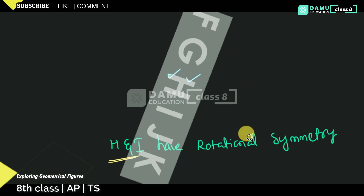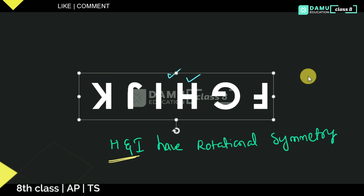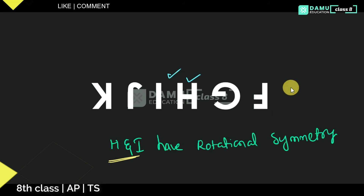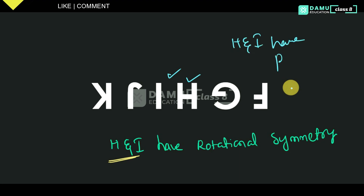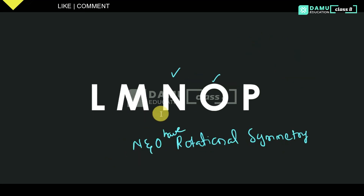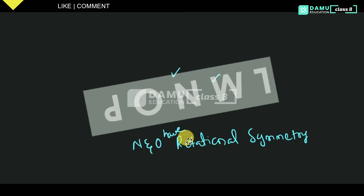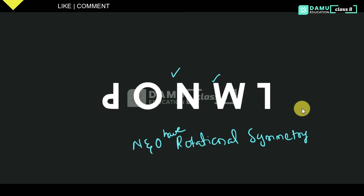If you rotate like this — yes, we are getting H and I as having point symmetry. H and I have point symmetry — that is, up and down we can see the same. Next, N and O also — N and O will see the same as the previous one, so N and O have point symmetry.